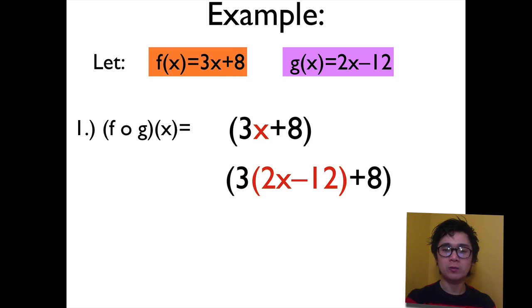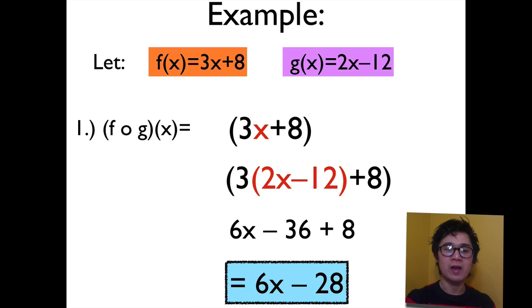And now we have 3 times 2x minus 12 plus 8. So we will distribute 3 to 2x minus 12. So we will have 6x minus 36 plus 8. And simplifying our expression, our function of f of g of x is simply 6x minus 28.